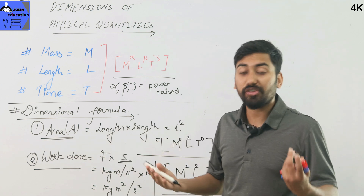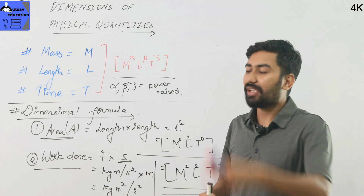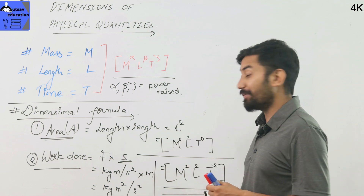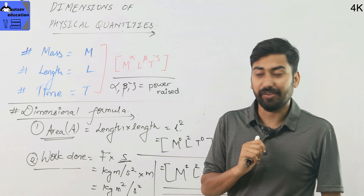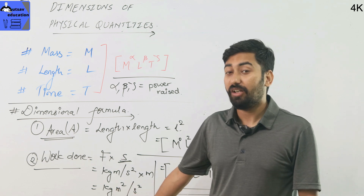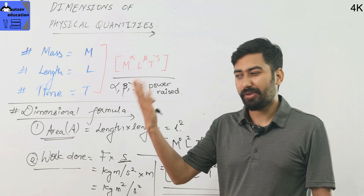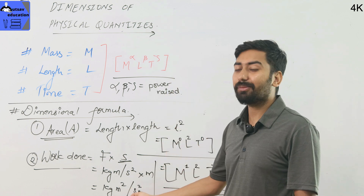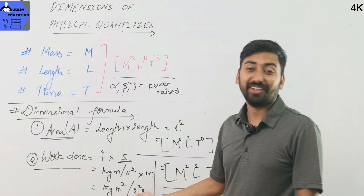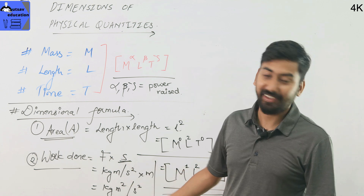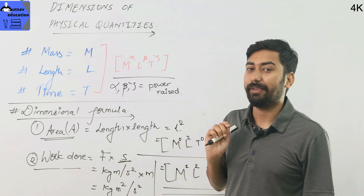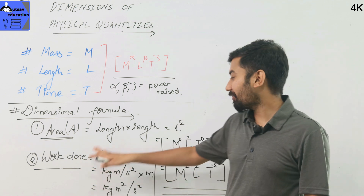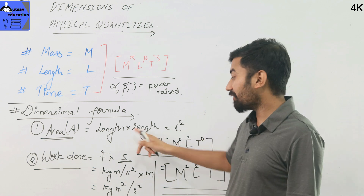You can write the dimensional formula directly. The unit can be converted back to the dimensional formula step by step. Practice writing the unit, then combine with the unit to get the dimensional formula. The direct formula will give you the dimensional formula.